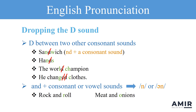Another example of dropping the D sound is in the word and. And is usually pronounced N, or N, when it comes before consonant or vowel sounds. For instance, rock and roll, or meat and onions.